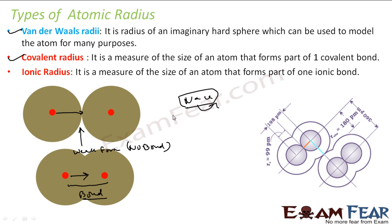So we have three kinds of radius. The Van der Waals radius, which is nothing but a radius of an imaginary hard sphere where there is no bond between them, just held by weak force of attraction. Then we have bonded radius, either covalent radius or ionic radius. These values differ. For example, for a given atom, the Van der Waals radius is 180 picometer, but the covalent radius or ionic radius is 99 picometer.